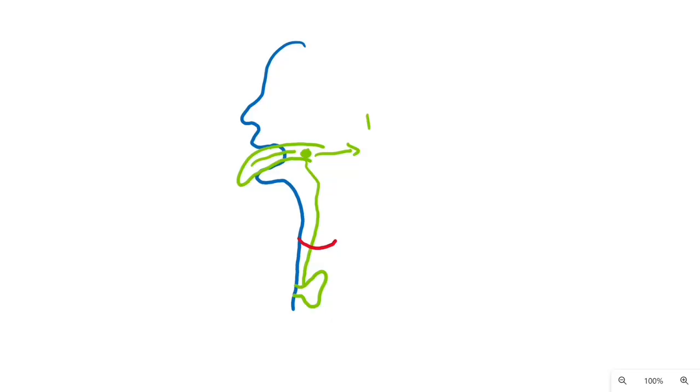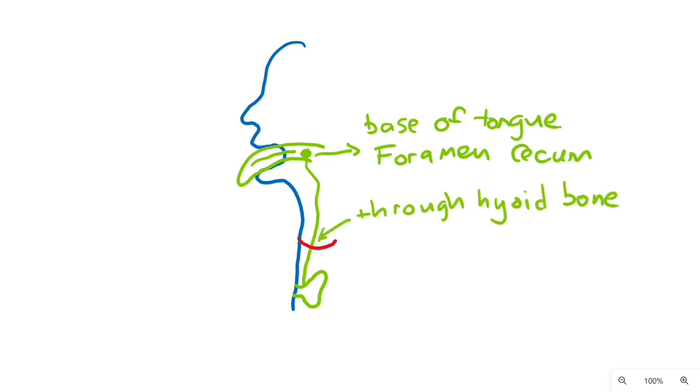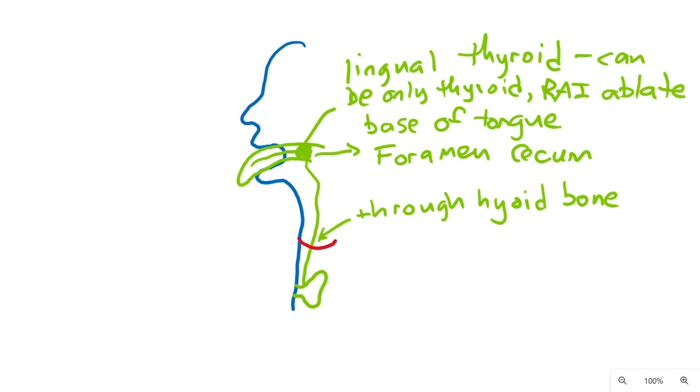The thyroid originates in the base of the tongue at the foramen cecum and descends down through the middle of the hyoid bone during embryonic development. A lingual thyroid is thyroid tissue persistent at the base of the tongue and can be the only thyroid tissue in the patient. Treatment is usually radioactive iodine ablation.